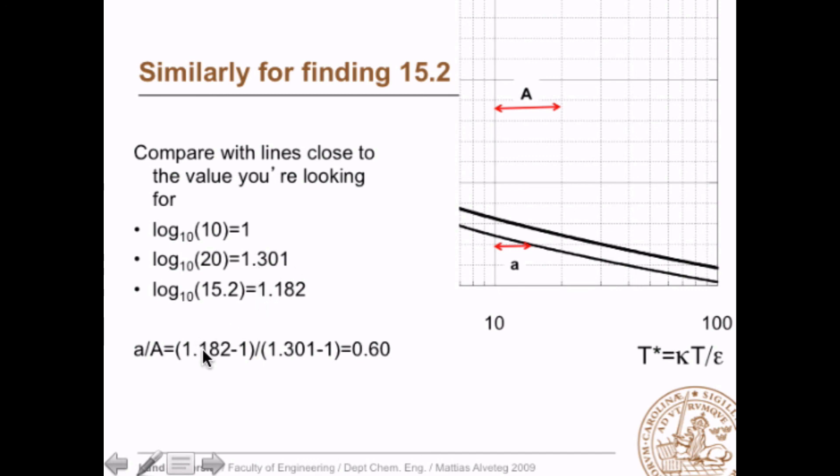So we take 1.182 minus the logarithm of 10, that's 1, divided by the logarithm of 20 minus the logarithm of 10, and we still get 0.60.